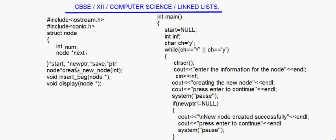Now the prototypes of the functions we will be using here: createNewNode, in which we will be passing an integer parameter; void insertBeginning, where an address is passed; and display, where again an address is passed — a node pointer, meaning some address of a node will be passed.